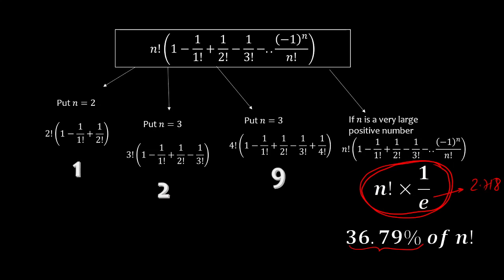So what did we learn? That there are more than one derangement, and we derived a formula to count them using De Morgan's principle and the inclusion-exclusion principle. Thank you.